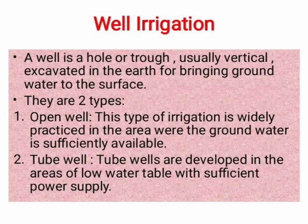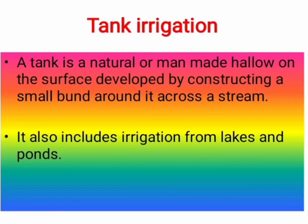Open wells: this type of irrigation is widely practiced in the areas where groundwater is sufficiently available. Tube wells: tube wells are developed in the areas of low water table with sufficient powers of play. Last type of irrigation is tank irrigation. A tank is a natural or man-made hollow on the surface developed by constructing a small bund around it across a stream.